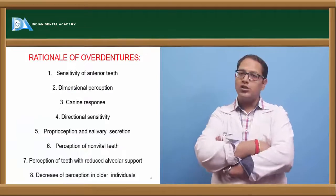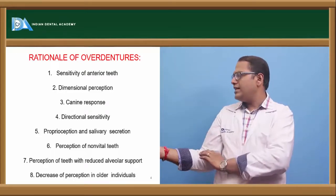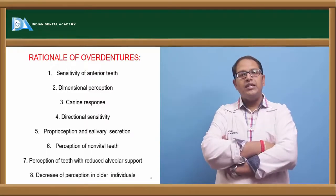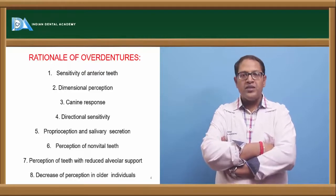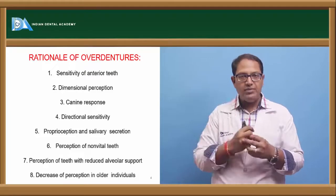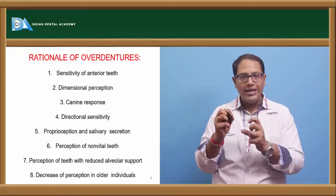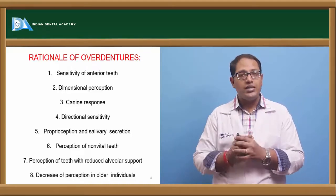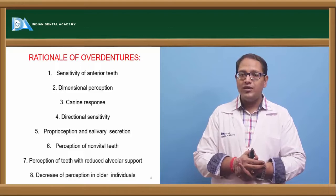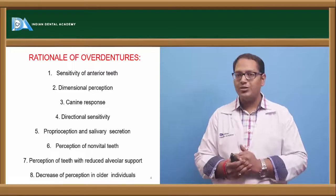What are the rationales for overdenture? The one I like the most is the proprioceptive activity of the teeth. Natural teeth have periodontal ligaments that can transfer signals for whatever is happening — like when we are chewing something and there is a small stone in our food, the natural teeth will stop before biting on the stone. That response is called proprioception. That proprioception is not present in a regular denture, but when we have natural teeth remaining, proprioception can also be maintained.